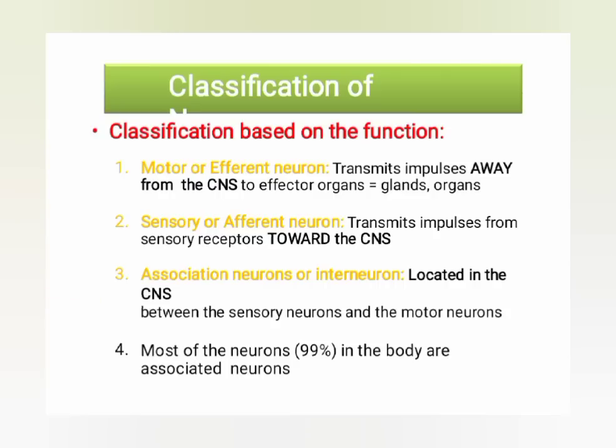There are four categories. The first is the motor or efferent neuron, which transmits impulses away from the CNS to effector organs and glands. The second is the sensory or afferent neuron, which transmits impulses from the sensory receptor toward the CNS.